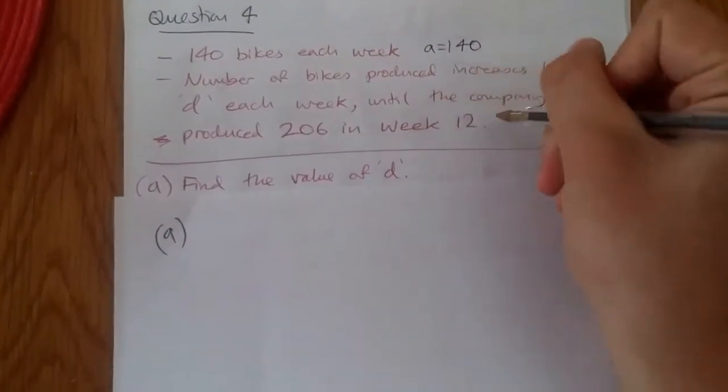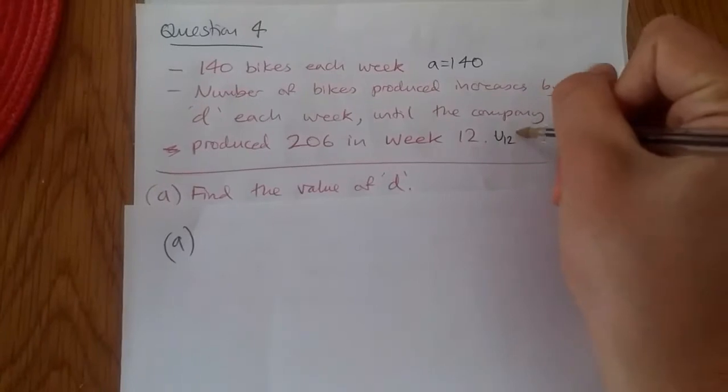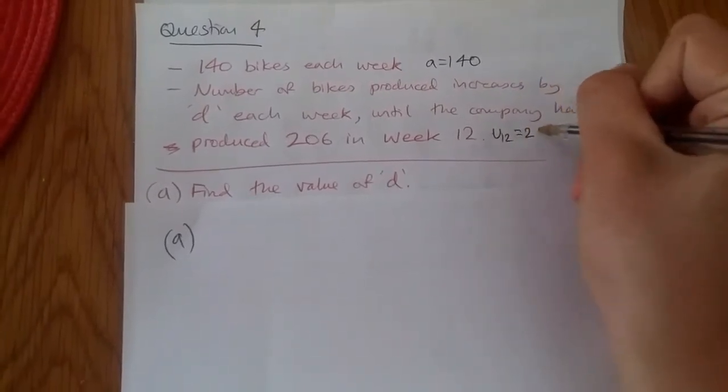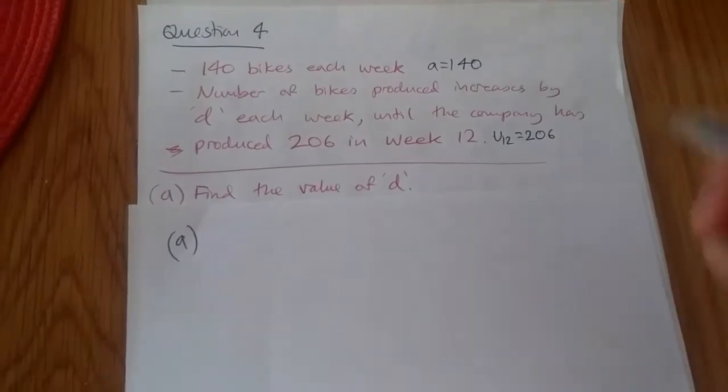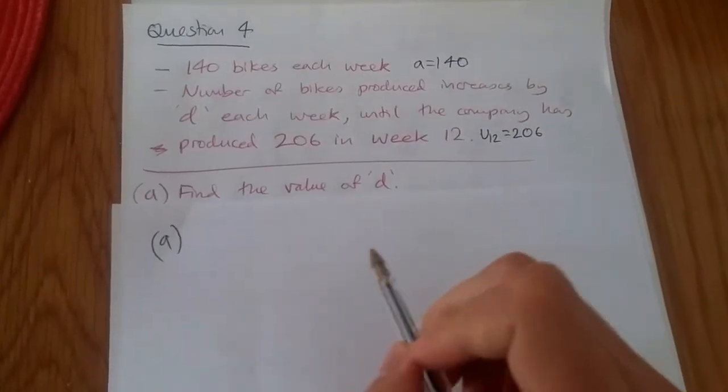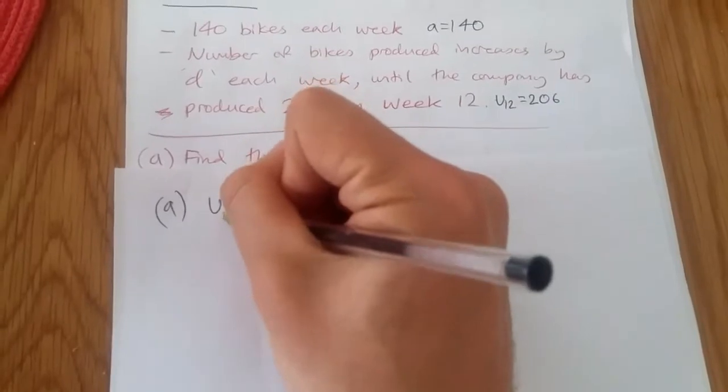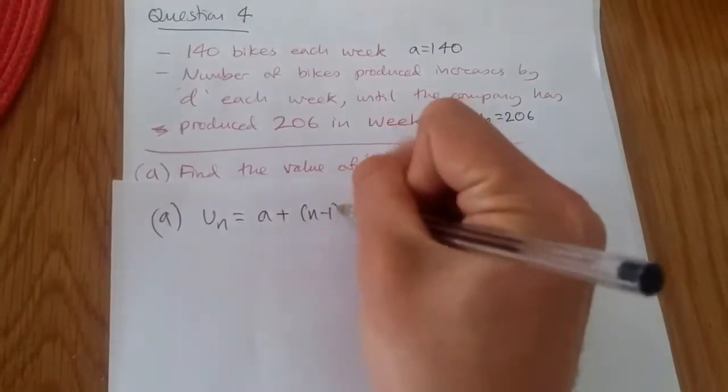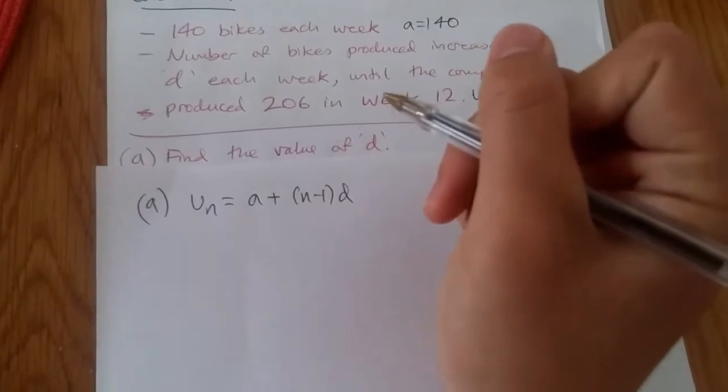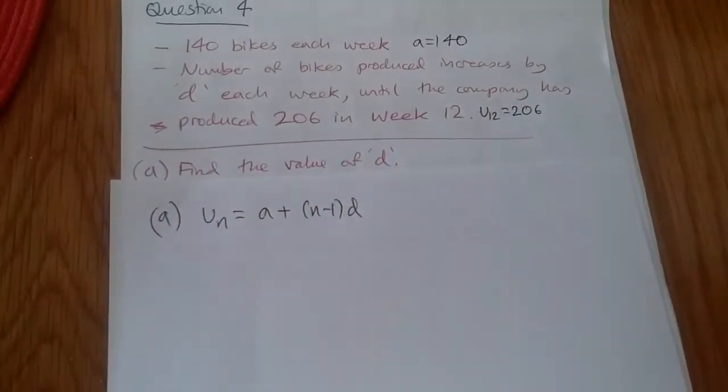And we know in week 12, U12, the position, the number of bikes being produced is 206. So now using our general position equation, we've got UN equals A plus N minus 1 D. All we have to do now is pretty much substitute everything.